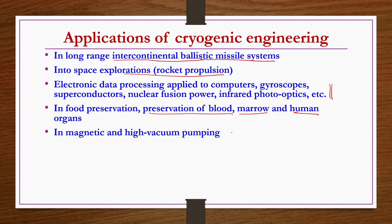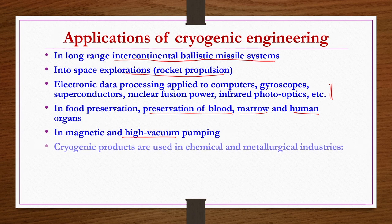Cryogenics is also used in magnetic and high vacuum pumping. Some materials at low temperatures may become waxy or solidified, making transport difficult. Magnetic and high vacuum pumping systems can be applied to transport such materials. Cryogenic products are used in chemical and metallurgical industries as well.